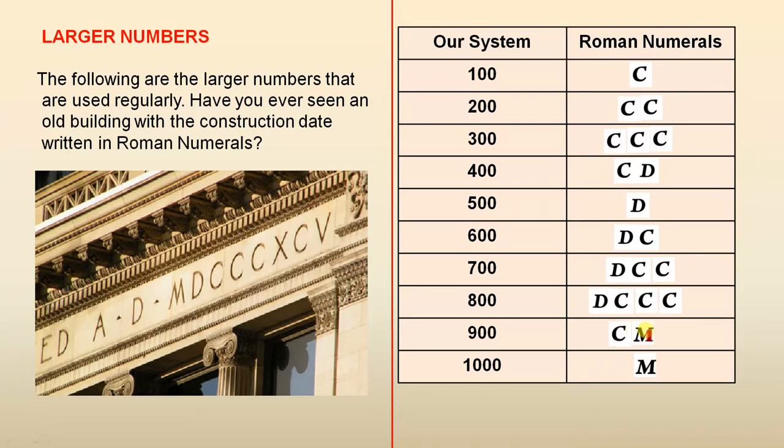Now for the 900, we have, sorry, we have 1000. See the M? The M is 1000. So all you do is take away 100 because C is 100. So 1000 take away 100 is 900, and M is 1000. If you can remember those, and they're not that difficult to remember, you won't have any trouble with Roman numerals, and I'm sure you'll work out this date.